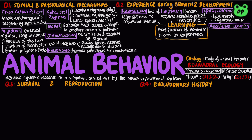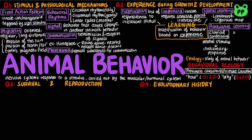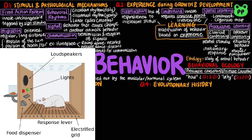In associative learning, animals associate one feature of their environment with another. Classical conditioning is a type of associative learning in which an arbitrary neutral stimulus is associated with an involuntary response. For example, when a dog repeatedly hears a bell before being fed, the dog will salivate in anticipation at the bell's sound. Operant conditioning is another type of associative learning in which an animal learns to associate one of its voluntary behaviors with a reward or punishment — also called trial and error learning. For example, a rat that is fed after pushing a lever will learn to push the lever in order to receive food.